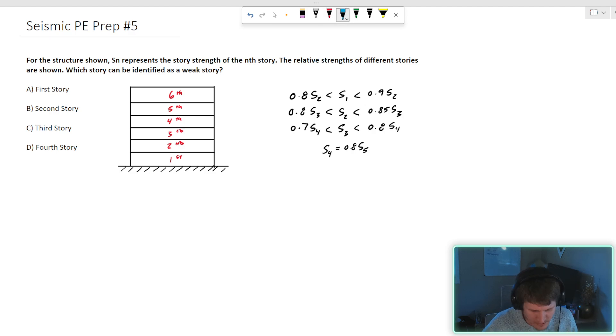Which story can be identified as a weak story? We have our little six story structure shown here. Sometimes I can get in my head being like, is it the floor that we're talking about and get kind of jumbled up? Don't look at it at the floor level because we're talking about story strength. And the strength of each story comes from the vertical lateral components of that story, not the floors, not the diaphragms. This is first, this would be S sub two, S sub three, and so on and so on.